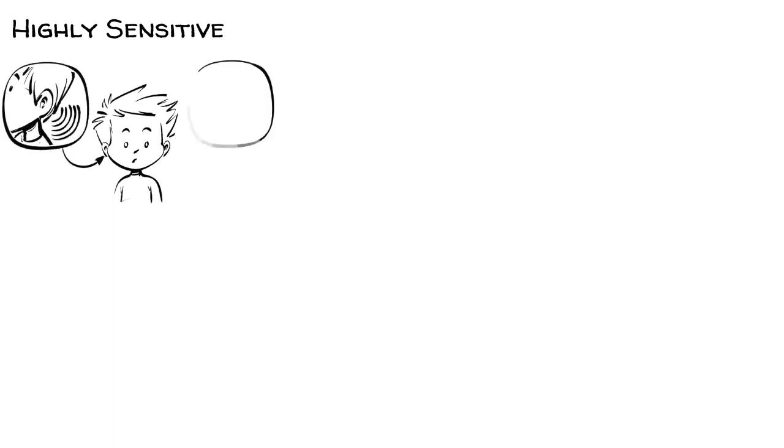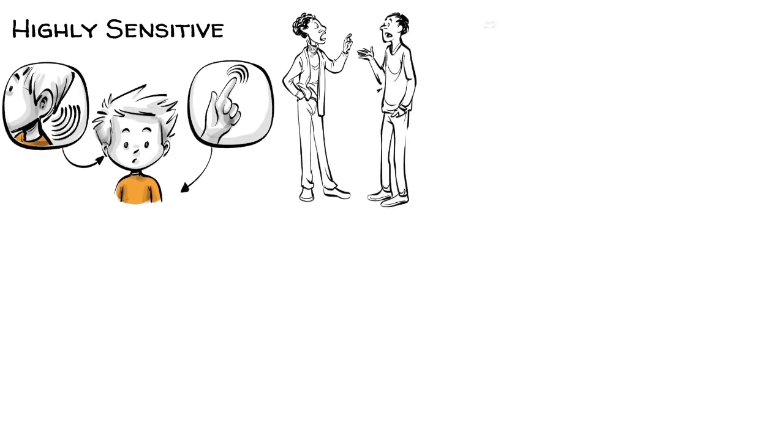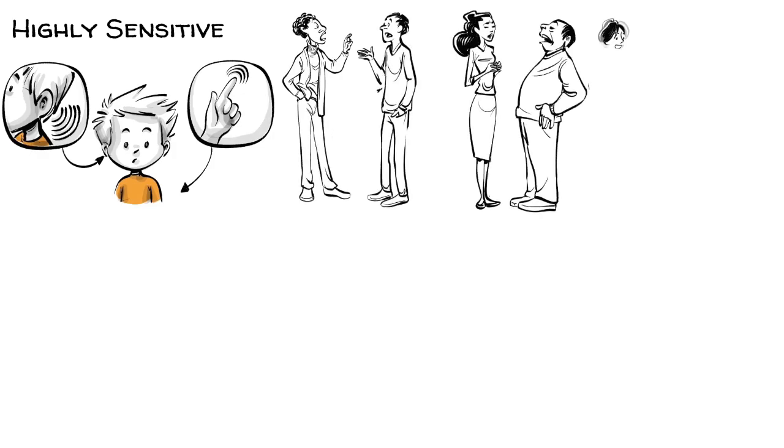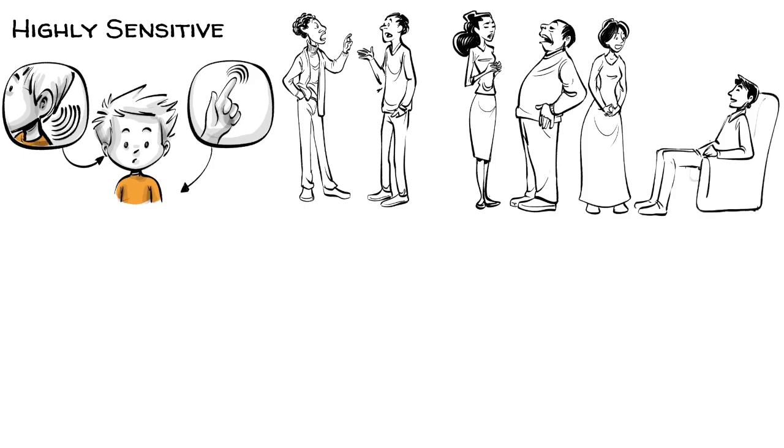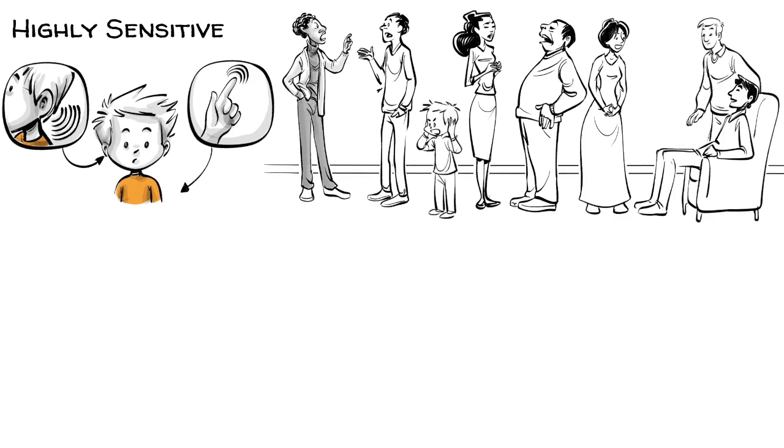Timo is highly sensitive. His brain amplifies whatever input it perceives. He hears everything and has a heightened sense of touch. However, this superpower makes situations where many people speak simultaneously very challenging. Timo hears everyone but understands nothing.